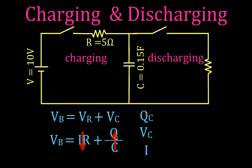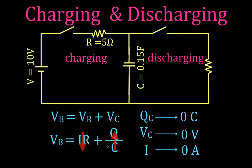For discharging, all three values — the charge, the voltage, and the current — all begin at their maximum values. When I close this switch, they all decay to zero: zero coulombs, zero volts, and zero amps for the circuit. That's the summary of charging and discharging for all three of those values.